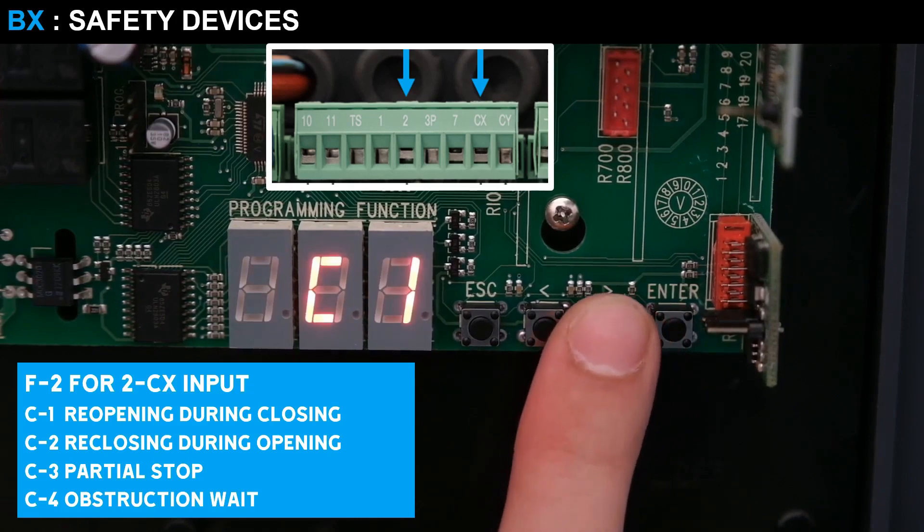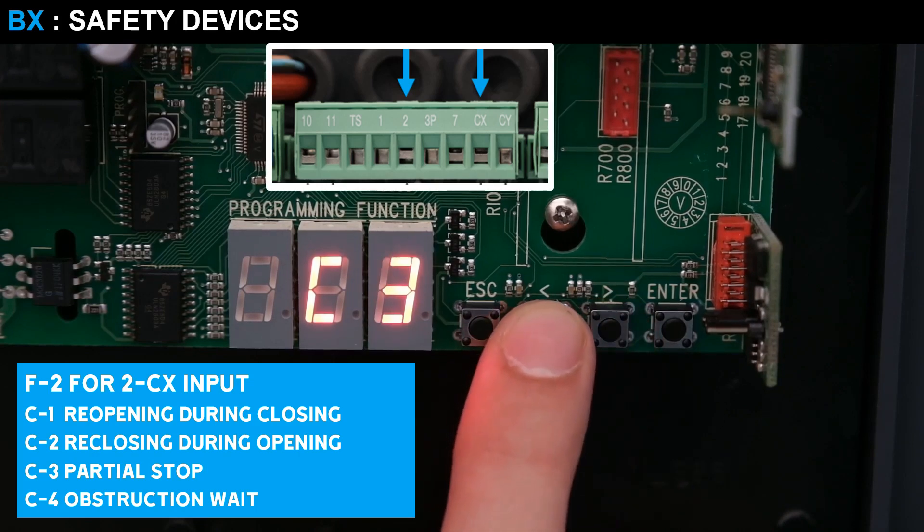C1 for reopening during closing, C2 for reclosing during opening. C3 for partial stop only with automatic closing activated. C4 for obstacle waiting. In our case, we choose C1 and press Enter to confirm.